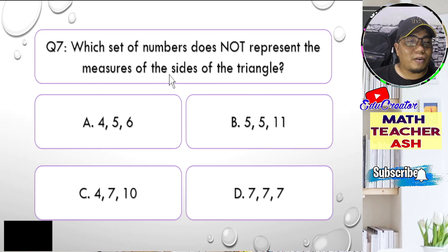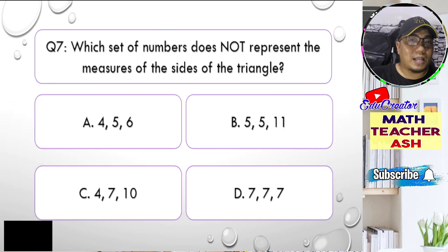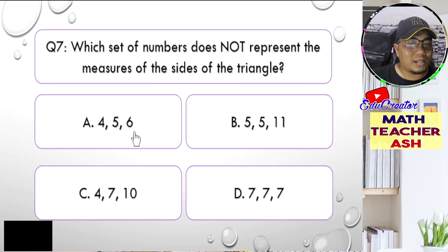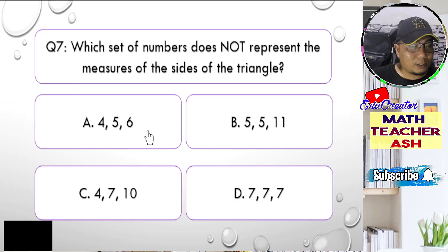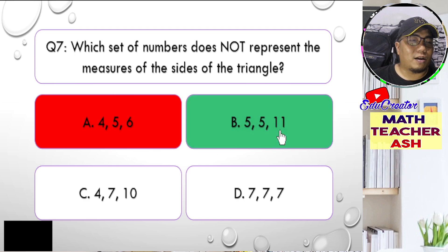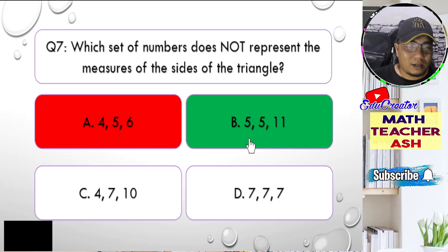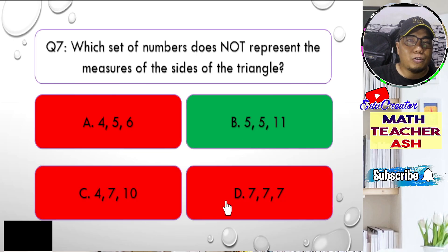We are finding the measurement that does NOT represent the sides of a triangle — the unrealistic one. Applying the rule: 4 + 5 = 9, bigger than 6; 5 + 6 = 11, bigger than 4; 4 + 6 = 10, bigger than 5 — so A is realistic. For B: 5 + 5 = 10, which is less than 11. So we already have our correct answer — letter B, because 5 + 5 = 10 is less than 11, which is unrealistic. Letters C and D are also applicable for realistic sides of a triangle.